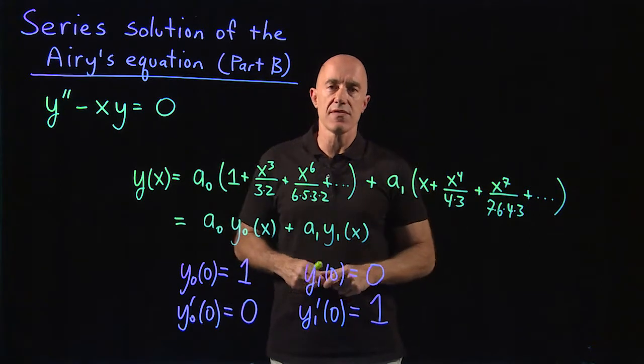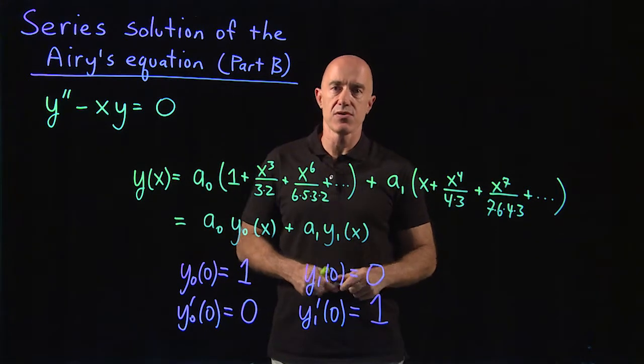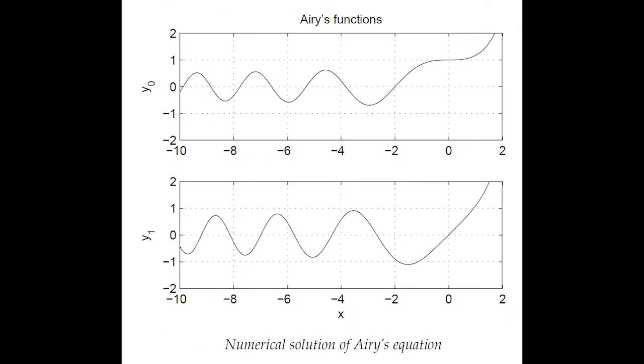Let's have a look at the graph of the solution. The upper graph is y naught of x versus x. If you look at x equals 0, you see that y naught of 0 equals 1, and the derivative of the function at x equals 0 is 0.